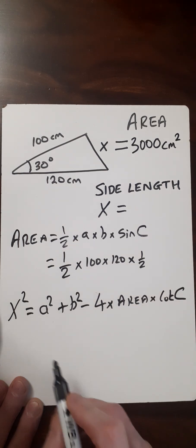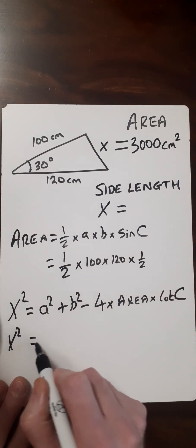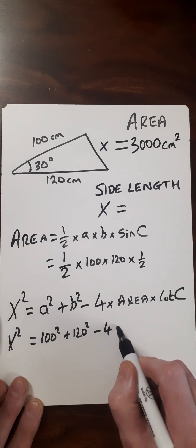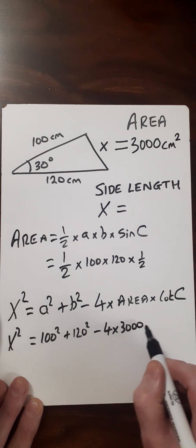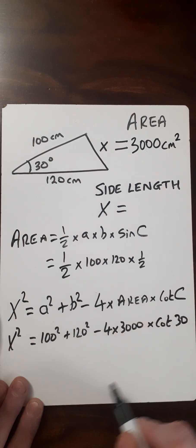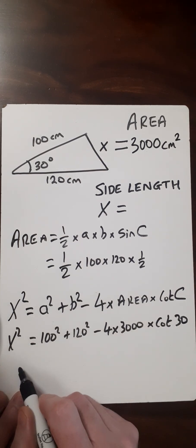Therefore, X squared equals 100 squared plus 120 squared minus four times 3000 times the cotangent of 30. Put that in your calculator.